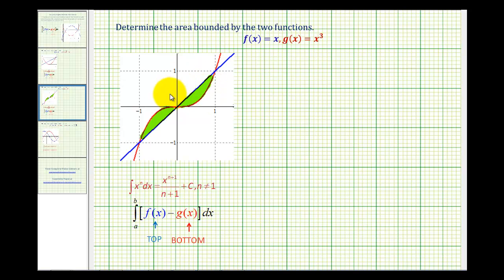What's different about this question is notice on the left the cubic function is on top and the line is on the bottom, but on the right the line is on top and the cubic function is on the bottom. This means we'll have to have two different definite integrals to determine the area of the entire bounded region.